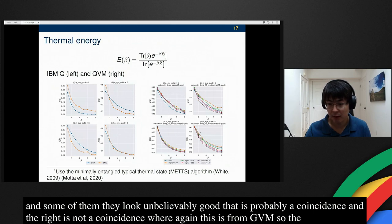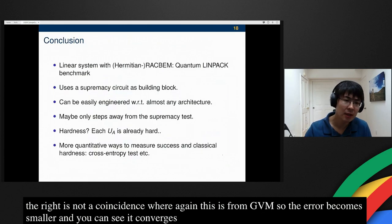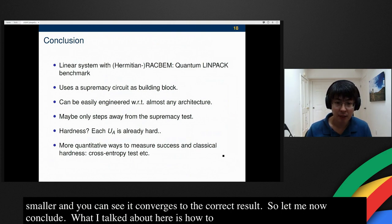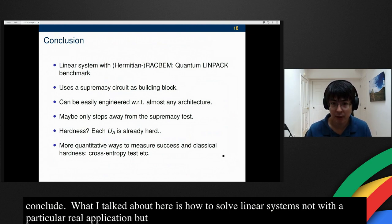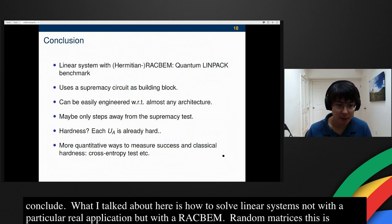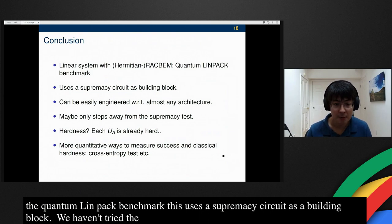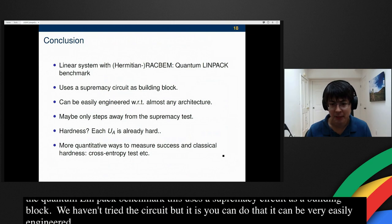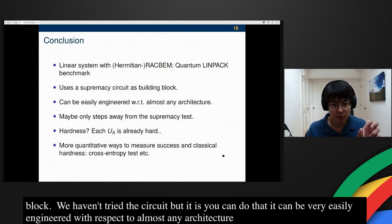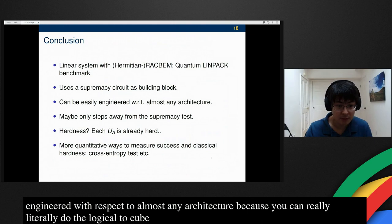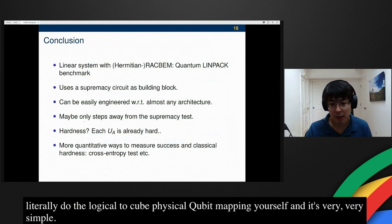Let me now conclude. What I talked about here is how to solve linear systems, not with a particular real application, but with a RACBEM. Basically, you can think dense random matrices. This is called the quantum LINPACK benchmark. It uses a supremacy circuit as a building block. Can be easily engineered with respect to almost any architecture, because you can really literally do the logical to physical qubit mapping yourself. It's very, very simple. Maybe this is only steps away from the supremacy test.